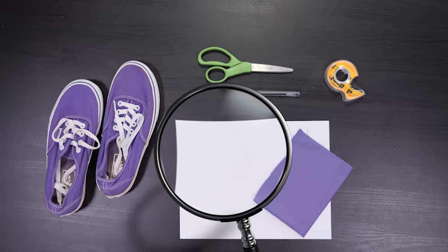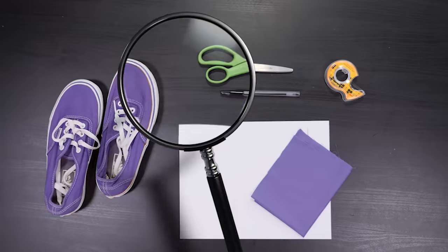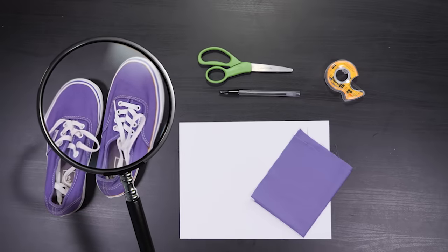I'm going to make a fake shoe sole for Izzy's shoe. For this, you'll need white card stock, a pen, fabric, double-sided tape, scissors, and a shoe. I'm using Izzy's.